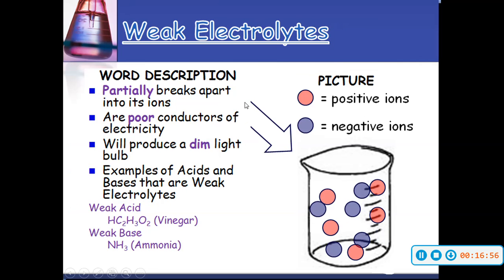Weak electrolytes partially break apart into their ions. If you take a look at our little beaker, you'll notice some of the molecules are still together, and we only have a few ions — so this is going to conduct electricity very poorly. We only have a few positively and negatively charged ions, so your electricity doesn't have much to travel through, producing a dim light bulb. Examples of weak acids and bases include vinegar and ammonia. This concludes our day one introduction to acids and bases. If you have any questions, please feel free to comment — thank you.